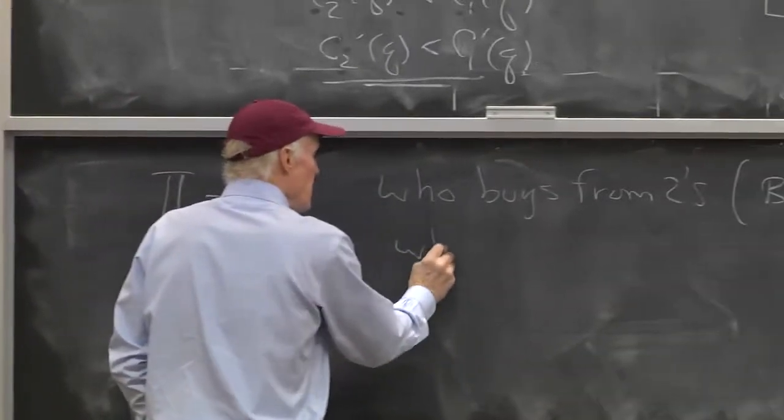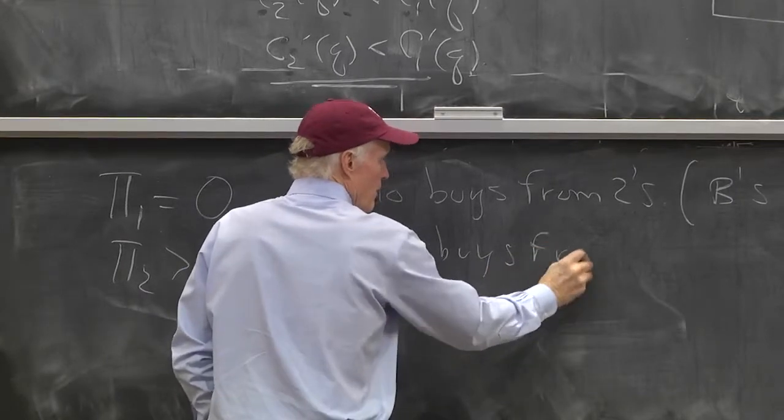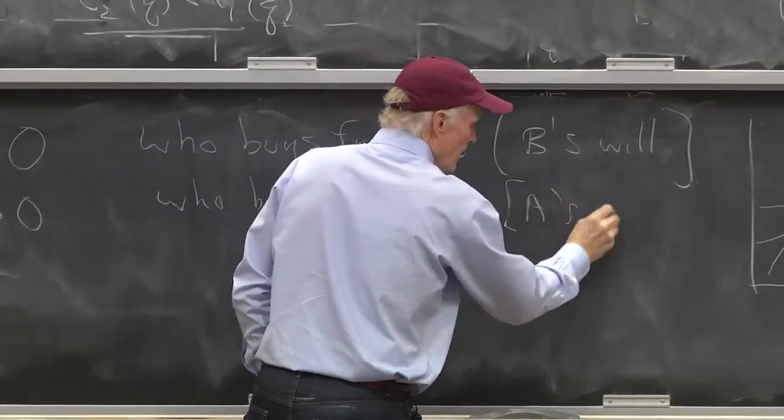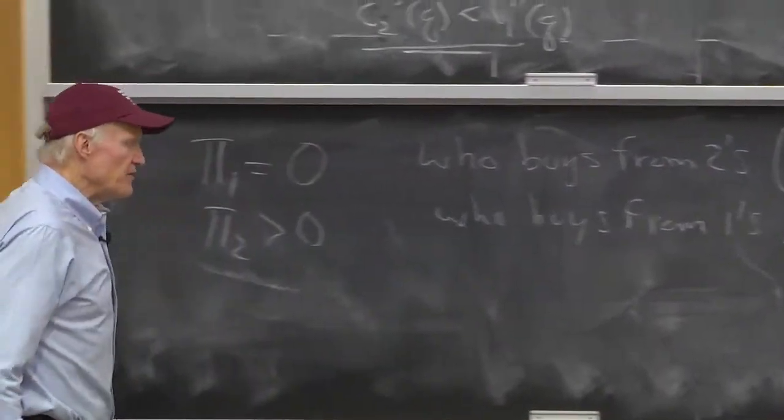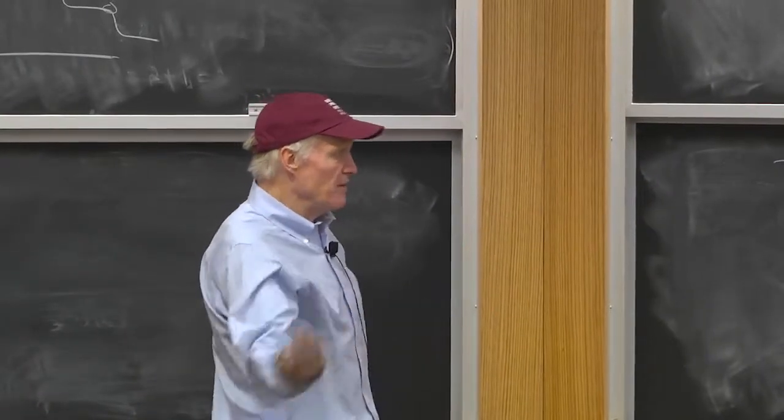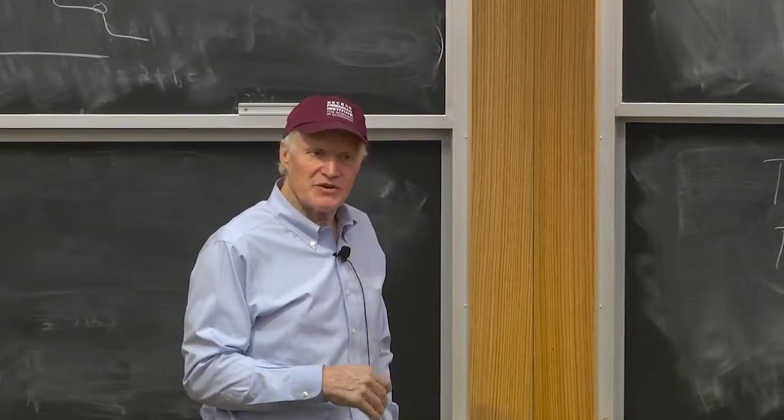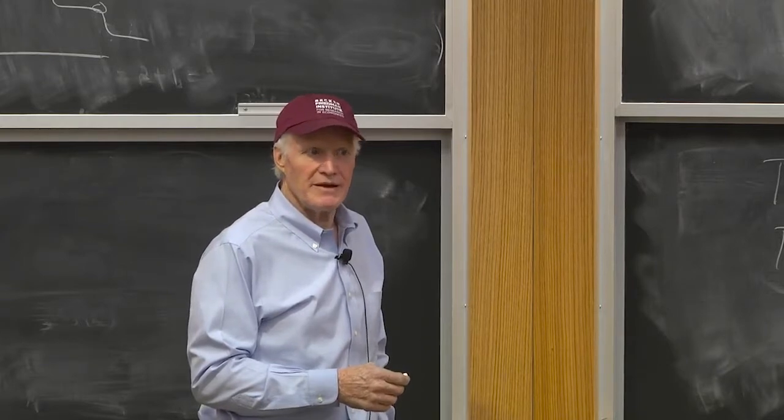Who buys from the ones? Well, somebody. A's will. So, the A's are going to have to buy from the ones. So, at least some A's are going to buy from the ones. At least some of the B's will buy from the twos. That doesn't quite completely determine the equilibrium, however. What else do we need to know?